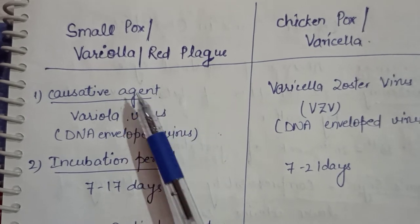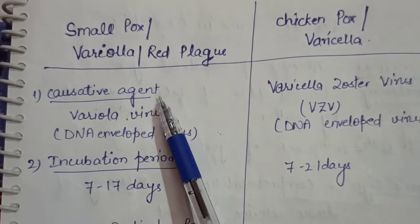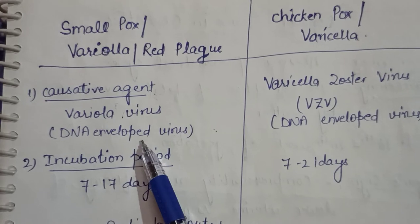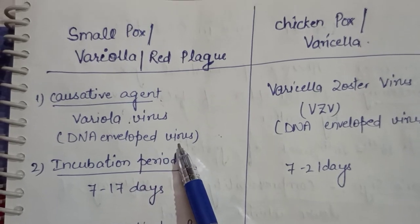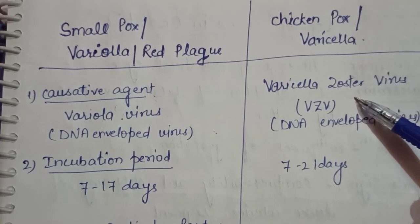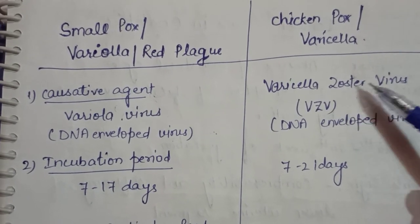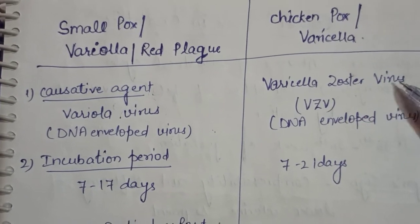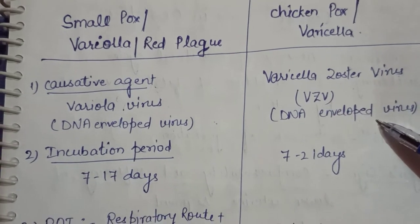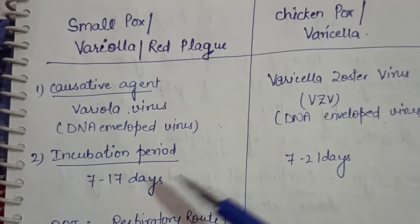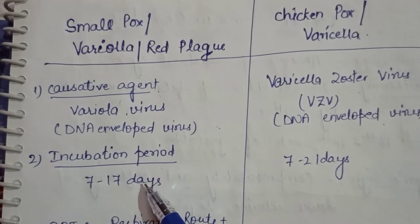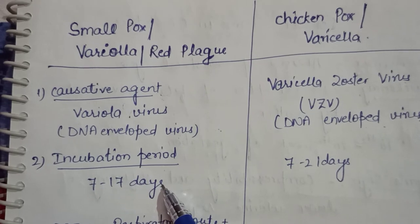The causative agent of smallpox is variola virus — it is a DNA enveloped virus. The causative agent of chickenpox is varicella zoster virus, which is also a DNA enveloped virus. The incubation period for smallpox is 7 to 17 days.